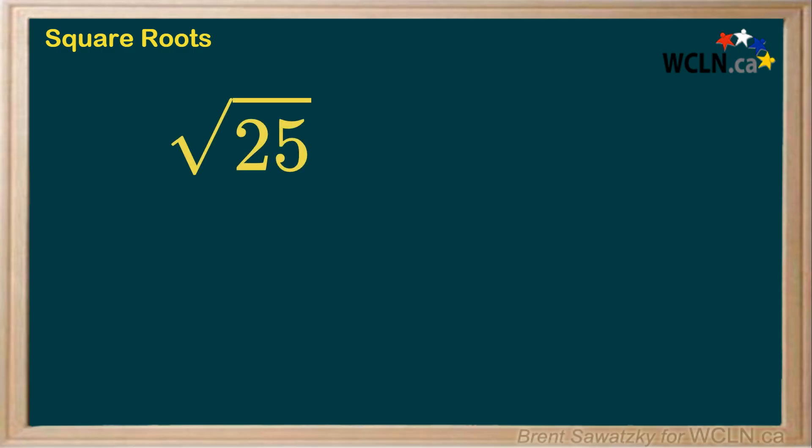If you're asked for the square root of 25, with no other information provided, then you can assume that you're being asked for the principal square root, that is 5.